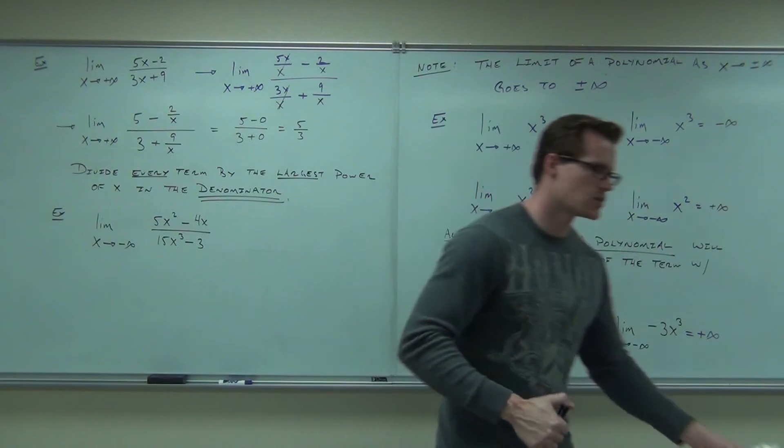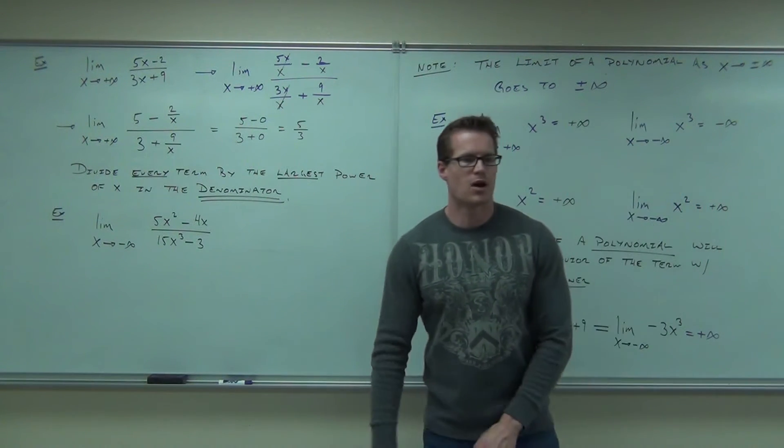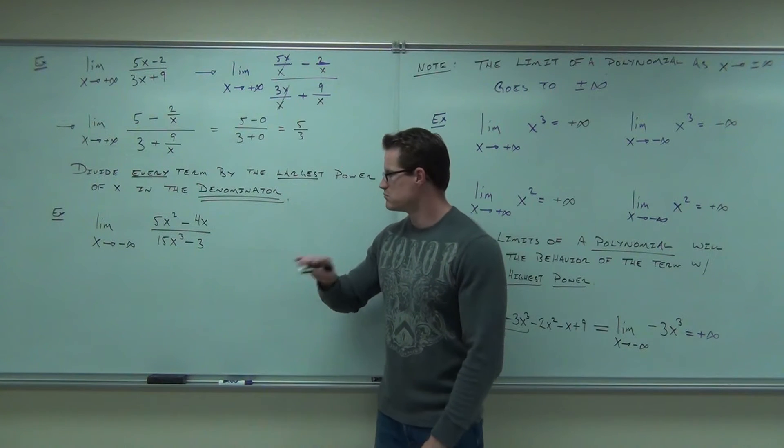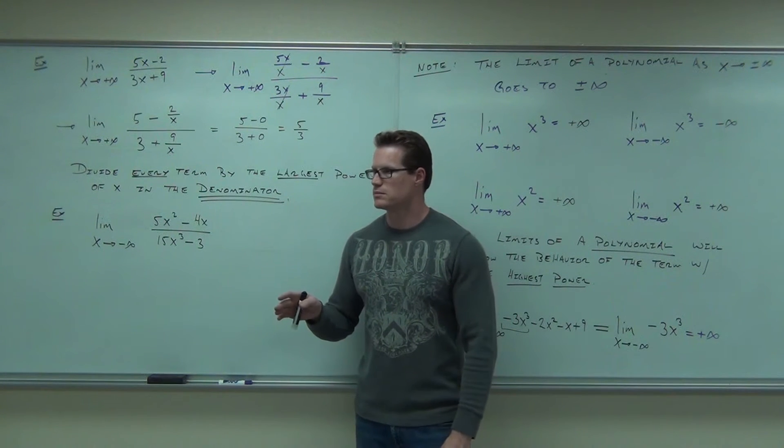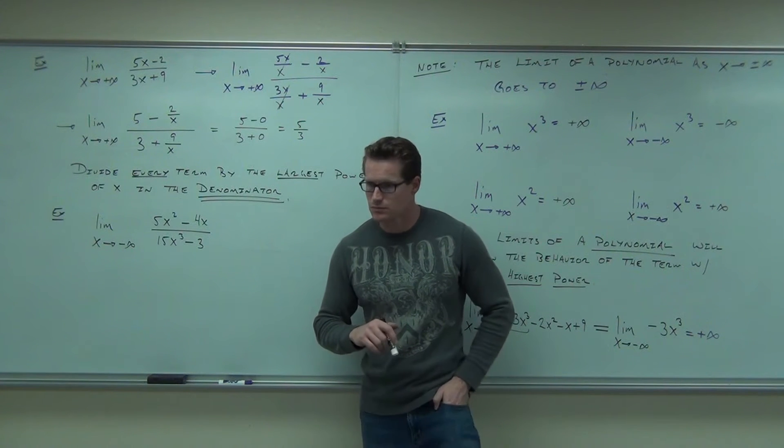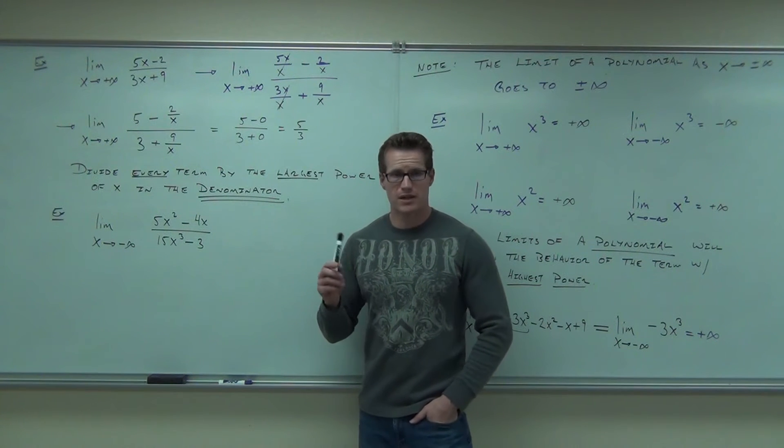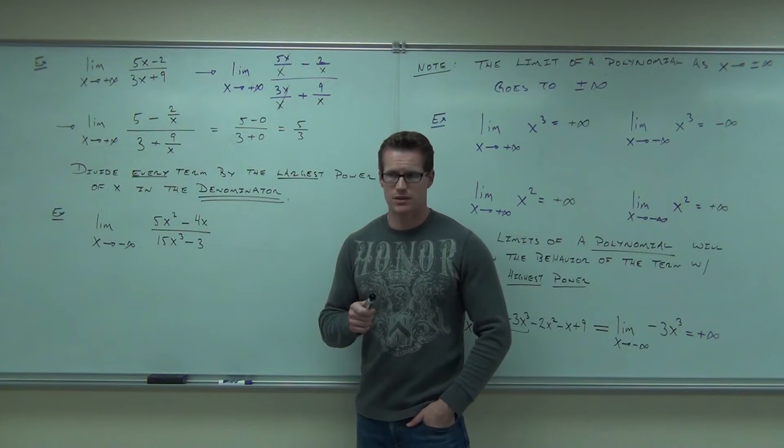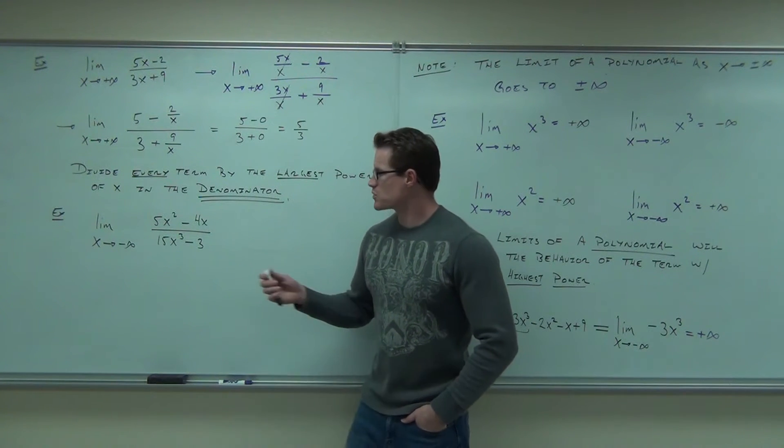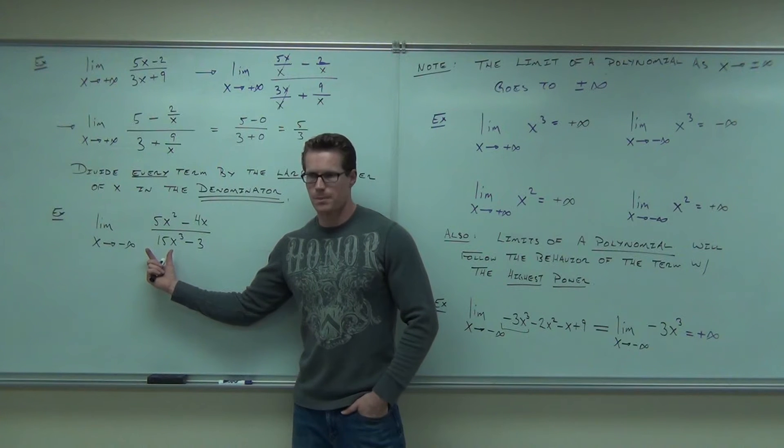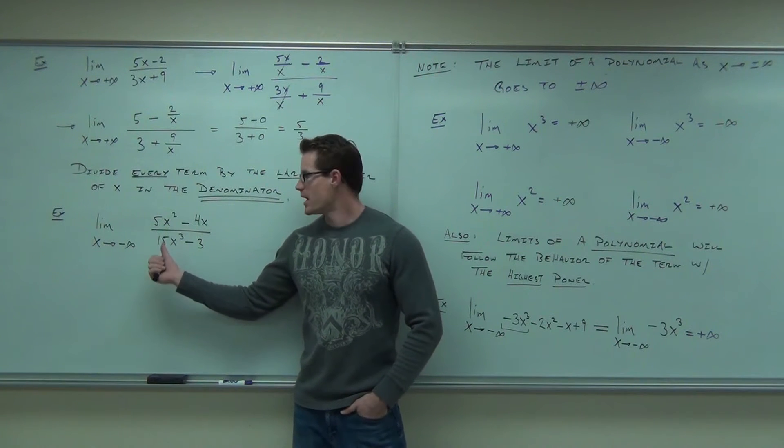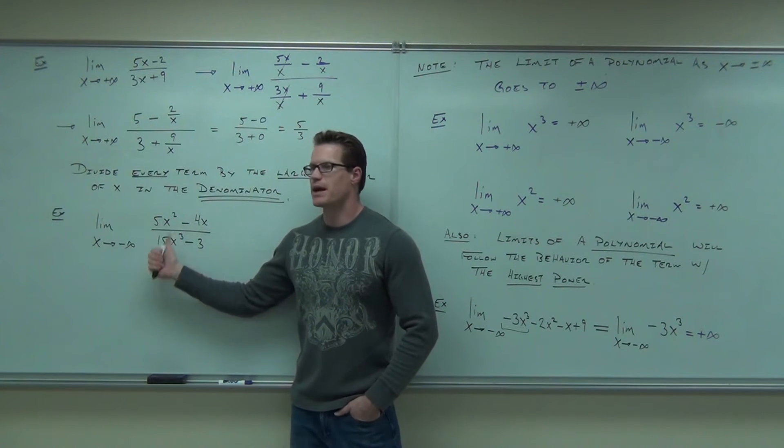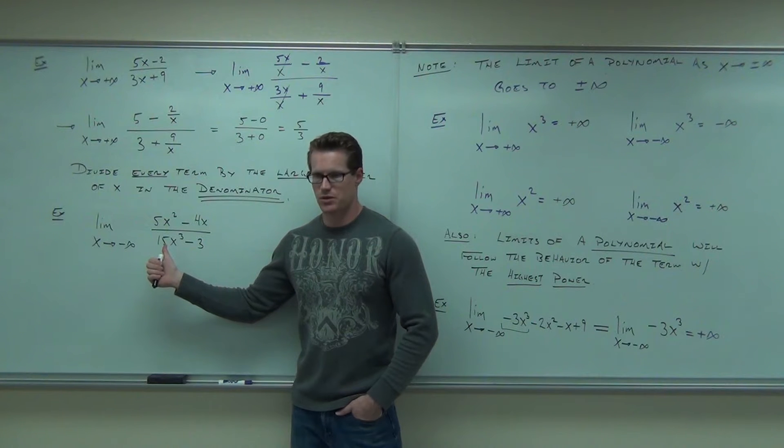If you were listening to what I was talking about, you could probably tell me where this limit is going right off the bat. Not one third. If the powers matched up, it would. Where's the power the biggest? That means what we're going to be doing here to show your work, you're going to be dividing everything not by x squared, but by x to the third power. You follow me on that?